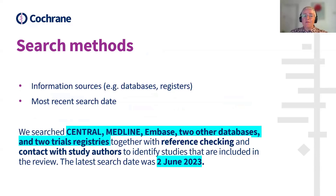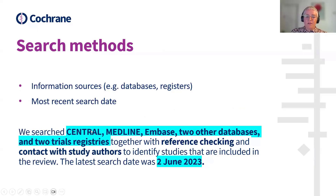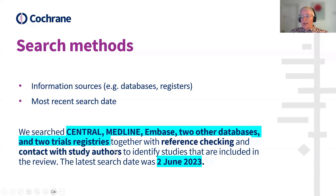Under the search methods heading, you should list the information sources — such as the databases and registers used to identify the studies — and also state the date when the last search was conducted. In the example, authors have identified the databases they checked along with the search date. They've also stated that they checked references and contacted other study authors, which isn't strictly a requirement for the abstract, but if you've done that, it can be reported here.